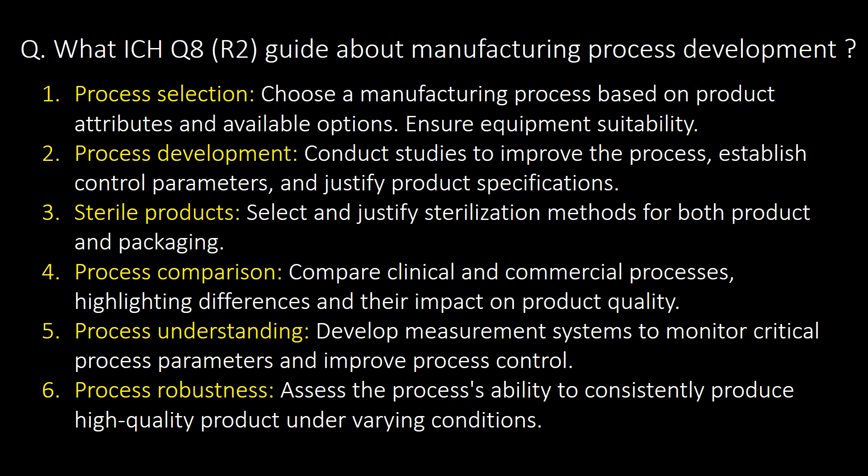What does ICH Q8 R2 guide about manufacturing process development? Choose a manufacturing process based on product attributes and available options, and ensure equipment suitability. Conduct studies to improve the process, establish control parameters, and justify product specifications. For sterile products, select and justify sterilization methods for both product and packaging. Compare clinical and commercial processes highlighting differences and their impact on product quality. Develop measurement systems to monitor critical process parameters and assess process robustness — the ability to consistently produce high quality product under varying conditions.